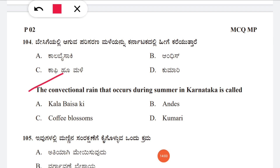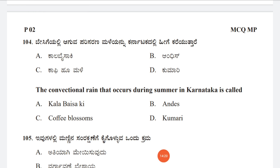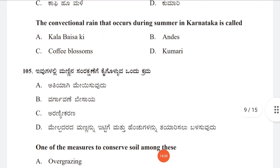Question 104: The conventional rain that occurs during summer in Karnataka is called — Kalabaisakhi, Coffee Blossom, and Kumari are the options. The correct answer is C, Coffee Blossom.